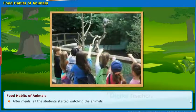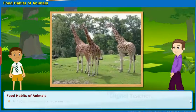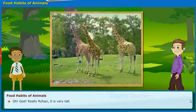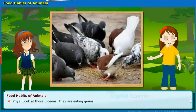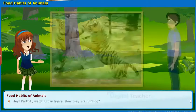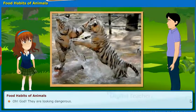After meals, all the students started watching the animals. Ali said, look at the giraffe, how tall it is! Rohan agreed it was very tall. Priya pointed out pigeons eating grains, and Lata noted all the pigeons had gathered at once and were eating. Karthik was told to watch the tigers fighting — they looked dangerous.